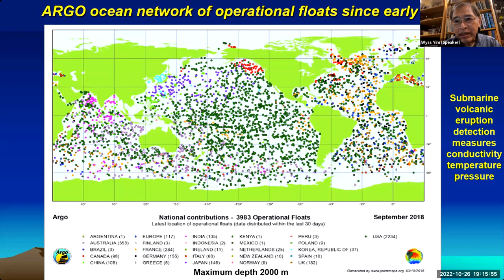The monitoring network of data buoys is provided by Argo since the early 2000s. These are operational floats measuring conductivity, temperature, and pressure down to a depth of 2,000 meters. Different countries are responsible for this network. We now have a system monitoring sea surface temperature provided by satellites for SST as well as real measurements from the Argo network — ideal for picking up submarine volcanic eruptions.